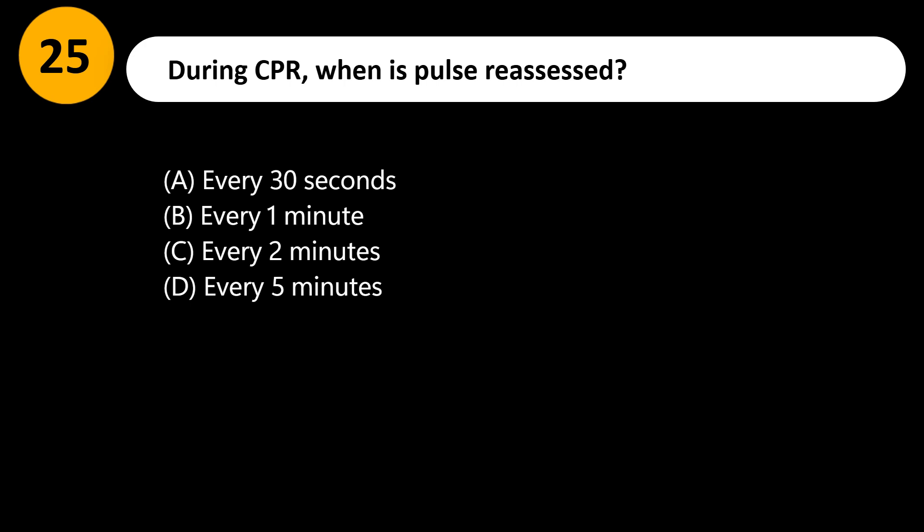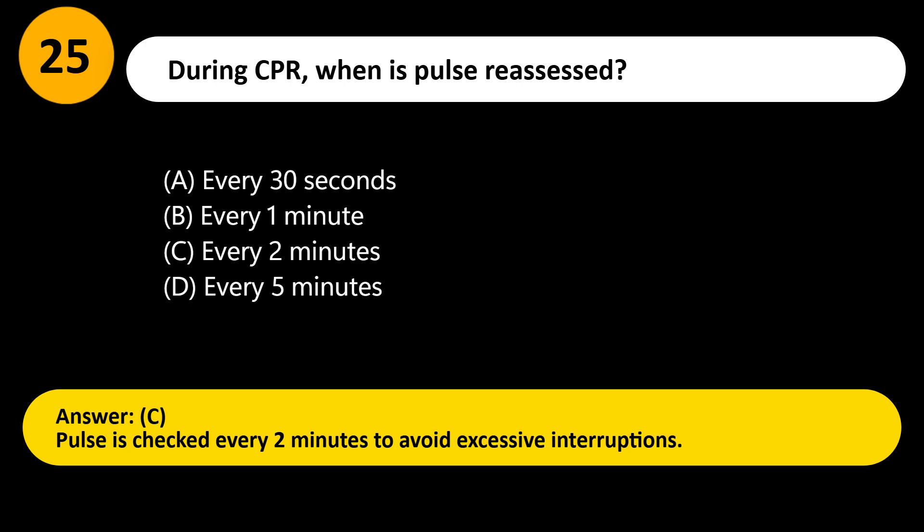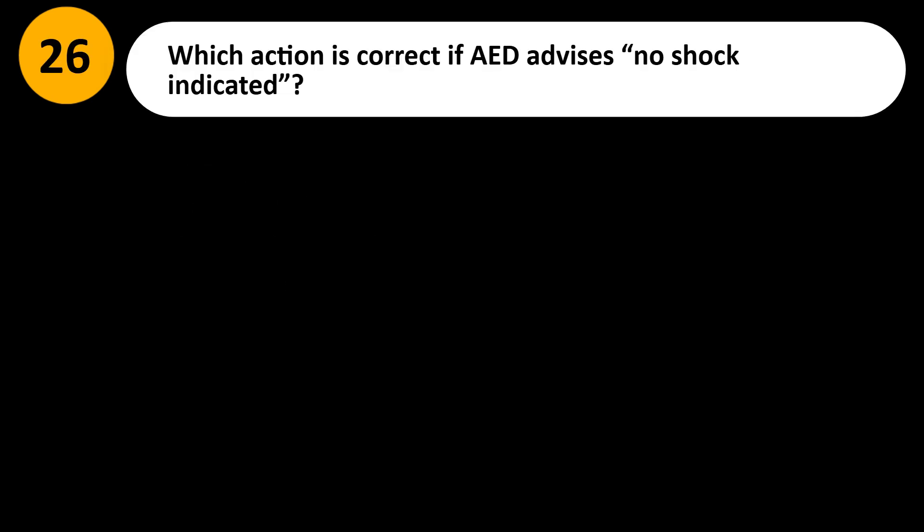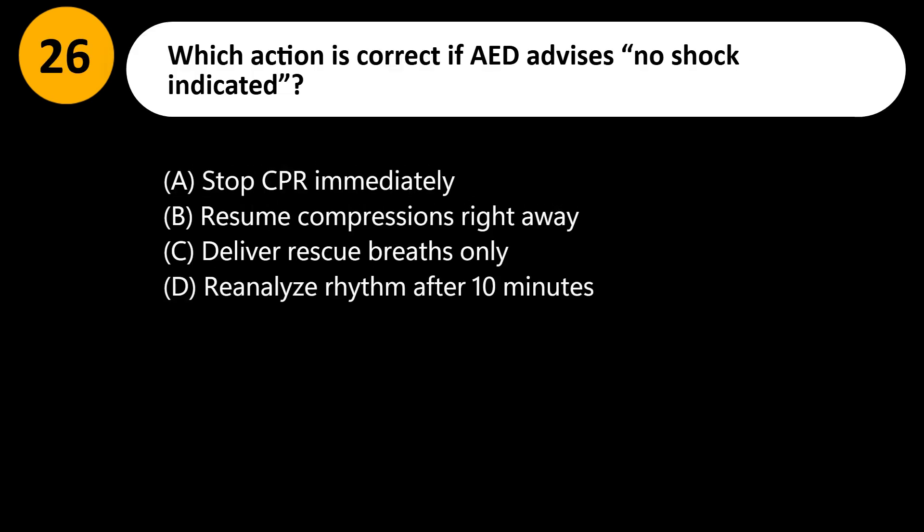When is pulse reassessed during CPR? A) Every 30 seconds, B) Every 1 minute, C) Every 2 minutes, D) Every 5 minutes. Answer: C. Pulse is checked every 2 minutes to avoid excessive interruptions.